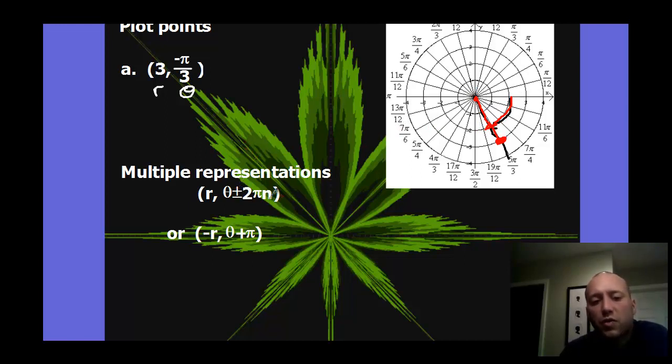We have multiple representations for all these points. So it's always r, theta, plus or minus 2 pi n. And these are just our coterminal angles from our trig.